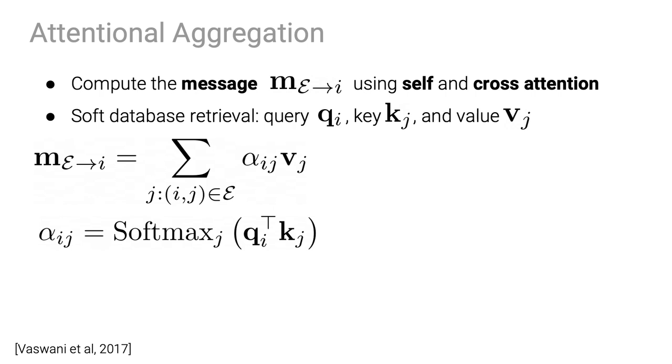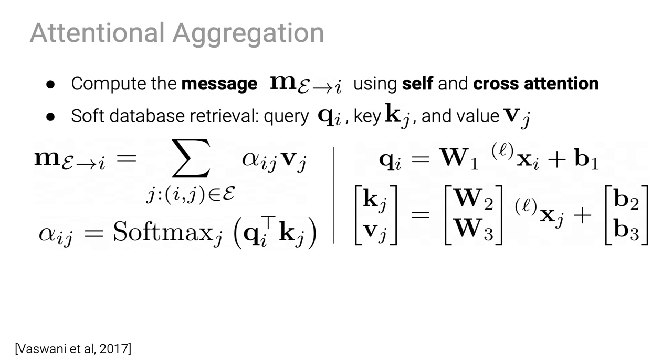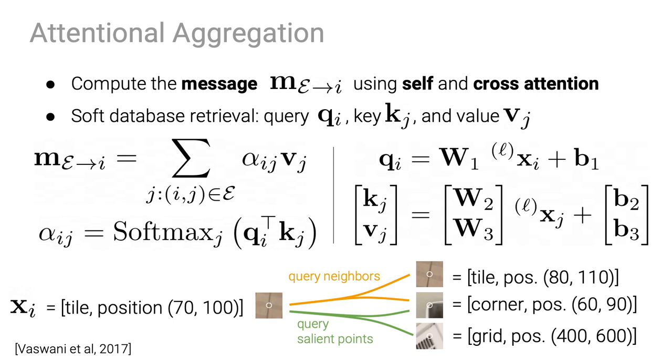The queries, keys, and values are computed from the current state of the keypoints via linear projections. Since the state encodes both the appearance and the position, a keypoint can carry its spatial neighbors, self-similarities, or other salient keypoints anywhere in the image.